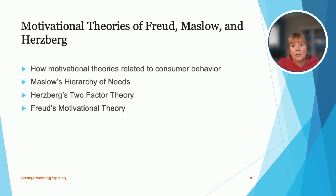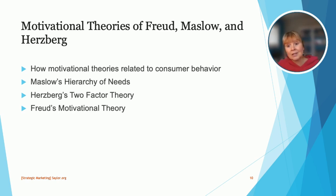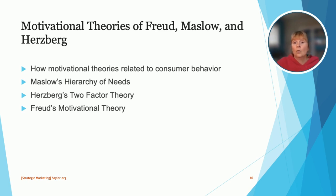Motivational theories are another way to understand consumer behavior, and there are several theories that may work. One is Maslow's hierarchy of needs — essentially, he believes that your basic needs must be met first before your higher-level needs will be considered. A lower-level need is security: once you feel like you've got a roof over your head and you know where your next meal is coming from, only then can you move on to the next level and even begin to consider buying a phone, a car, or a home.